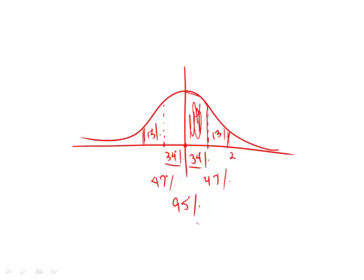So when you are two standard deviations above the mean, you're dealing with a very minute percentage — very very few people, sort of about 2%. Now this question says: a random variable Y is normally distributed with a mean of 200 and a standard deviation of 10. You can see that 210 corresponds to one standard deviation above, and 220 corresponds to two standard deviations above.